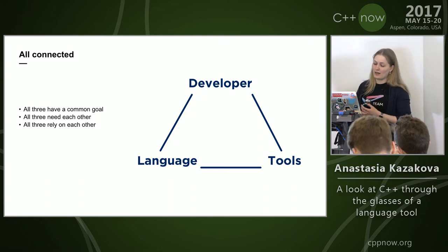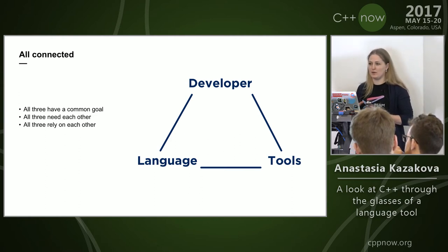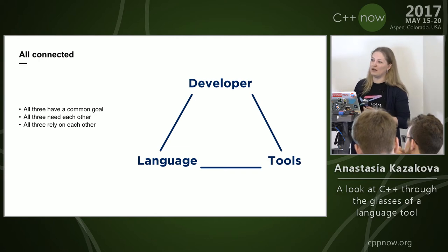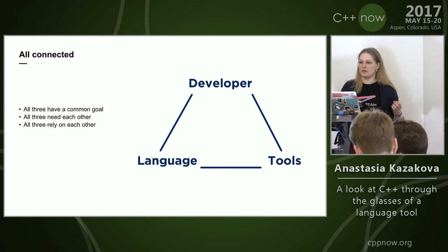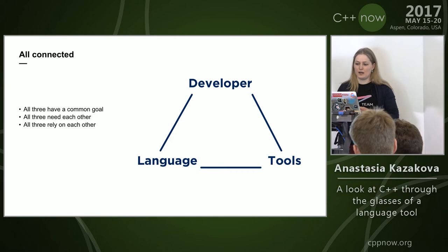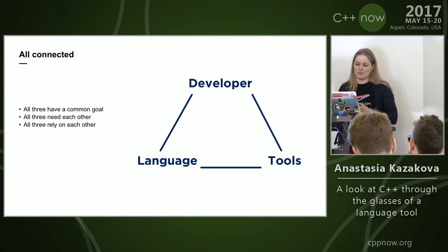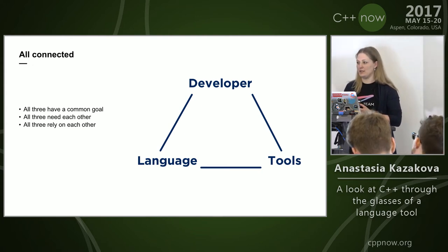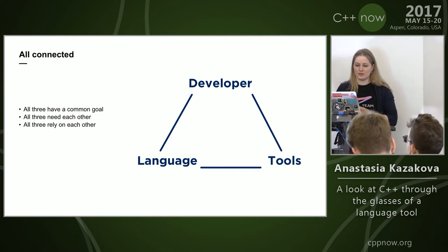Before talking about the language itself, I want to talk about the triangle of developer, language, and tools, and why each point is important — especially the collaboration between all three. Unlike school students who can try everything from scratch, developers doing production code cannot afford that approach. They have to take the tools and the language available so they can be most productive.